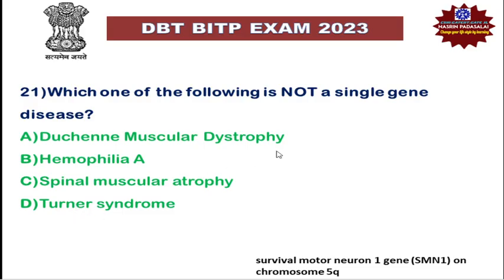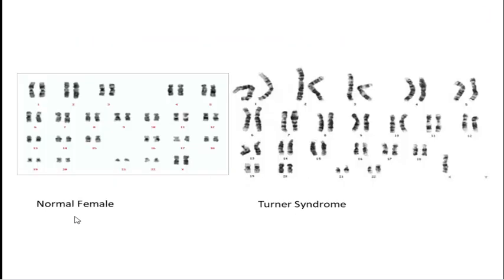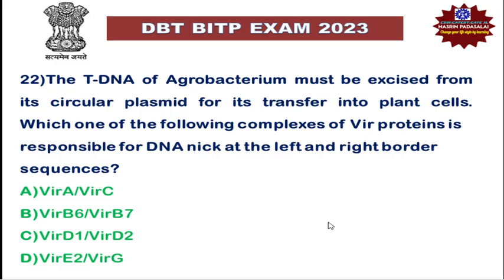This disease arises due to a defect in a single gene called CFTR. Spinal muscular atrophy is also a single gene disorder — it is due to a defect in a gene named Survival Motor Neuron 1, located on chromosome 5. Whereas Turner's syndrome is not a single gene disorder; it is a chromosomal disorder where either a part of the X chromosome or the entire X chromosome is missing in the cells of the female body.